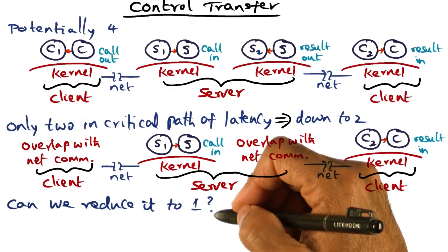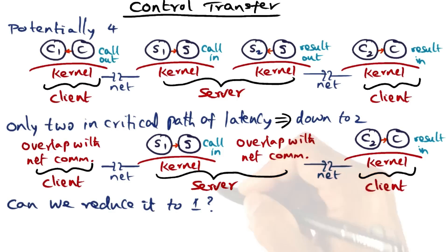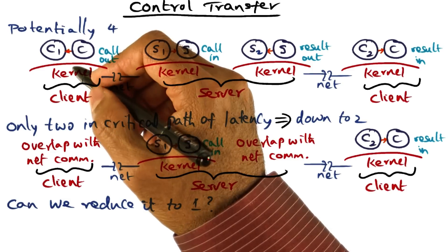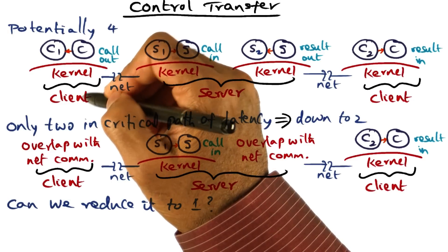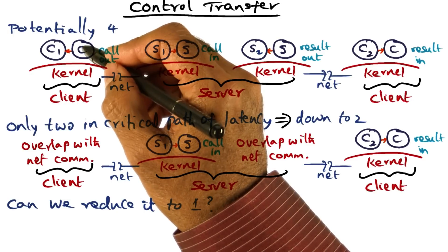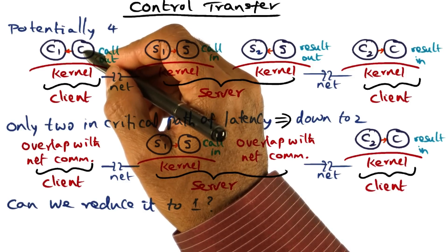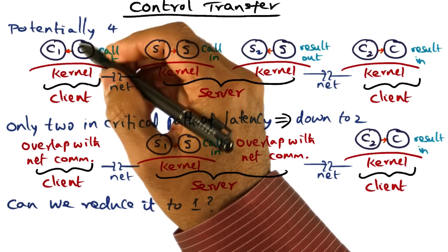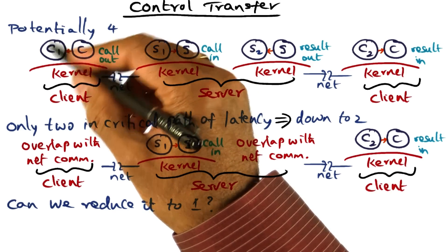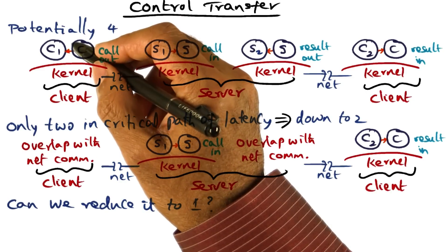Of course we are greedy — can we reduce it to one? Can we actually reduce the number of context switches down to one? When this RPC call was made, the operating system on the client side said this is a blocking semantic and therefore this thread is not going to do any useful work, so it blocks and waits for the results to come in. This context switch that the operating system did on the client side was essentially to keep the client box from being underutilized.